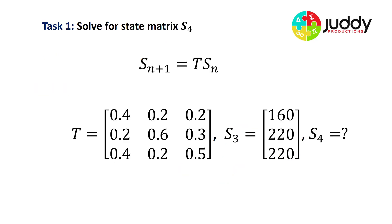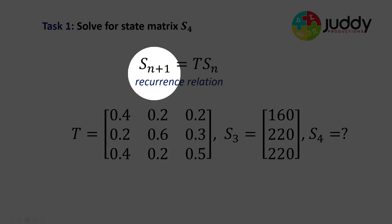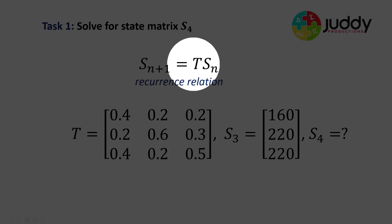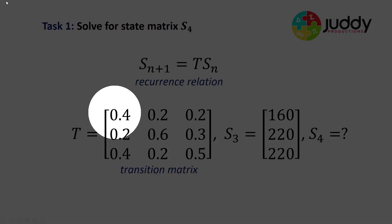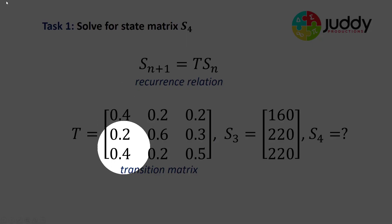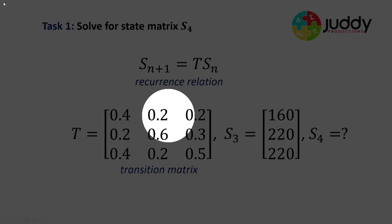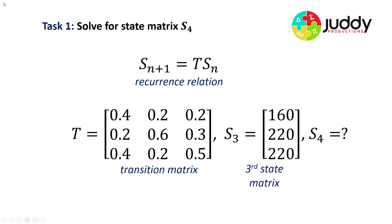Task number one: solve for the matrix S4. We have a recurrence relation where S(n+1) is the next state, T is the transition matrix, and Sn is the current state. Below we have a transition matrix where all columns add up to one, and we have a third state matrix — a 3×1 matrix — and we're asked to calculate the fourth state matrix, the next state in the sequence.